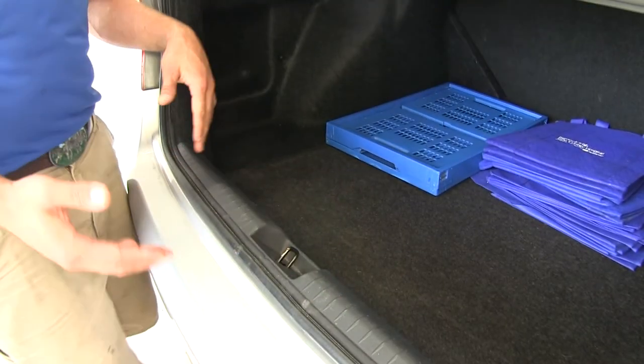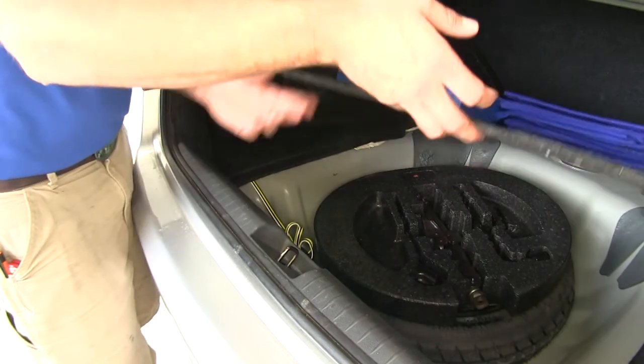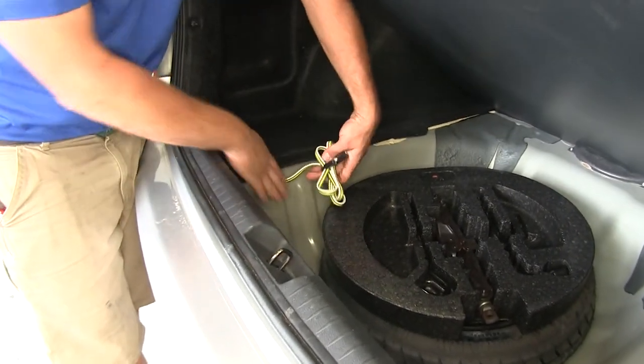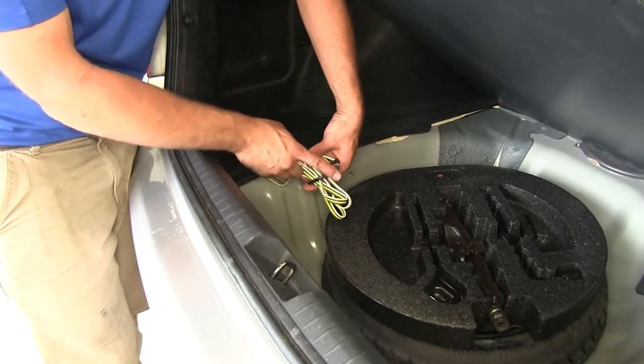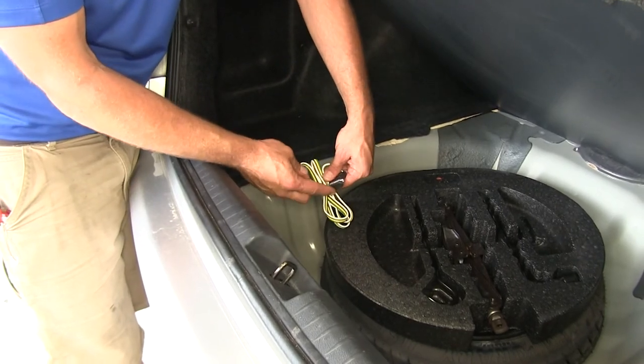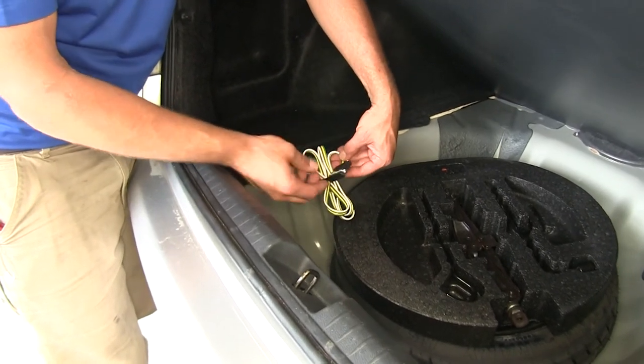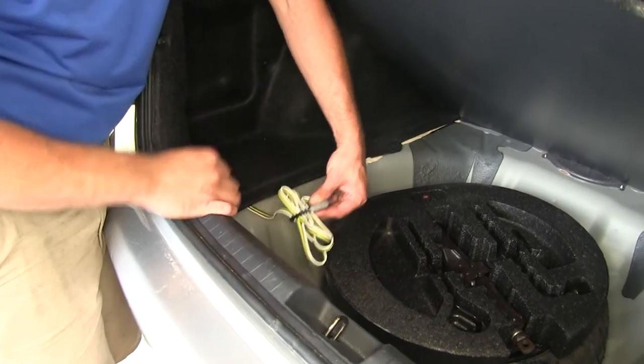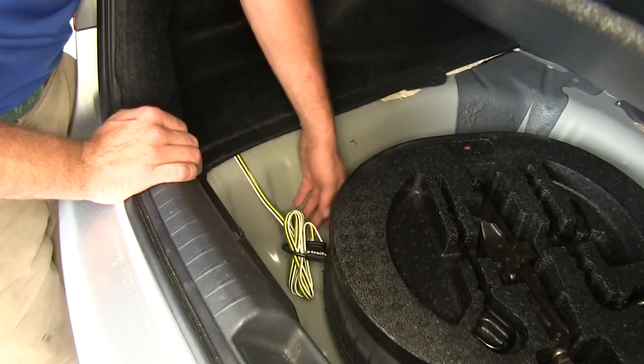Both of our wiring harnesses are designed to mount underneath the floor in our Civic, right here in our spare tire well. As you can see I like to take the cover, whether it's on the Curt or this one being the Tekonsha, wrap it around the wire and kind of keep it bundled up and out of the way.